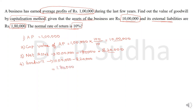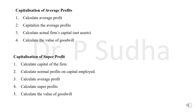I hope you have understood how to calculate goodwill under capitalization of average profit method. Now we are going to see how to calculate goodwill under capitalization of super profit method. Under super profit method, your first step is to calculate the capital — asset minus liabilities. When taking assets, exclude goodwill and fictitious assets. That asset minus liability gives you the capital of the firm.